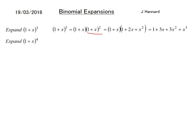Expand 1 plus X to the 4. That's still fairly easy. It's just 1 plus X squared squared. So we'll square the first, square the second, twice the other product and then do it again. Which is 1 plus 4X plus 6X squared plus 4X cubed plus X to the 4.